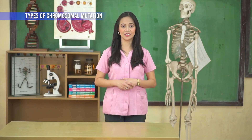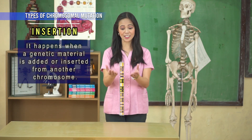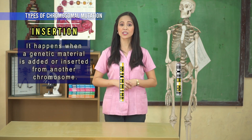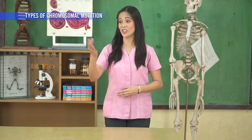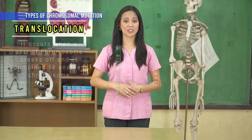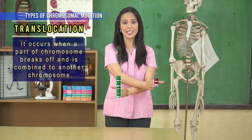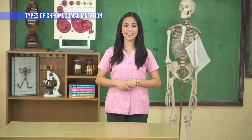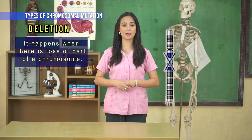There are several types of chromosomal mutation. First is insertion — it happens when a genetic material is added or inserted from another chromosome. Second is translocation — it occurs when a part of a chromosome breaks off and is combined to another chromosome. Third is deletion — it happens when there is a lost part of a chromosome.